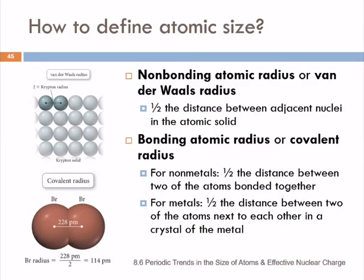First, we have to decide how we're going to define atomic size. Because what's an atom, really? You've got the nucleus, and then you've got these electrons in these kind of standing waves. How do you measure that? So we have to come up with ways of measuring an atom and defining what we consider the size.